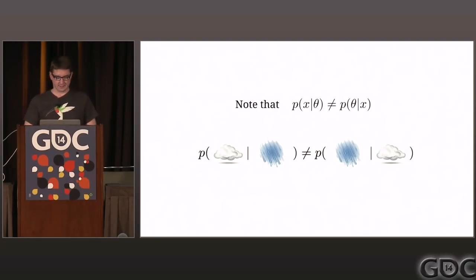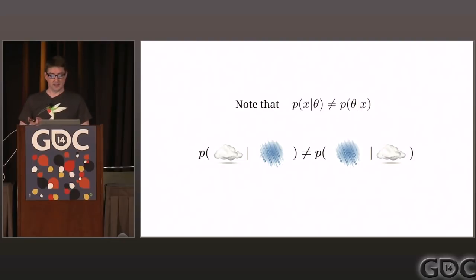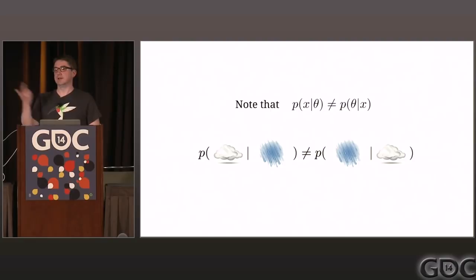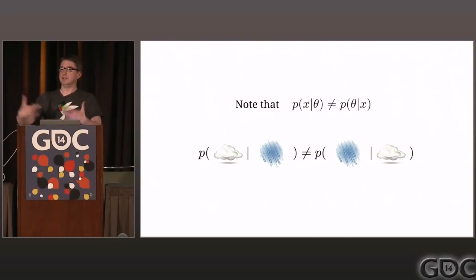A nice way to intuit about that: the probability of it being cloudy given that it's raining — if it's raining, it's very likely to be cloudy, so we'd imagine that probability is high. It's not equal to the probability that it's raining given it's cloudy. If it's cloudy, the likelihood of it actually raining is a good deal less — maybe 20% of the time it's cloudy, it actually rains. Or maybe more in San Francisco. So these two things are clearly not the same, and what we want to do is find out the right-hand side given the left-hand side.